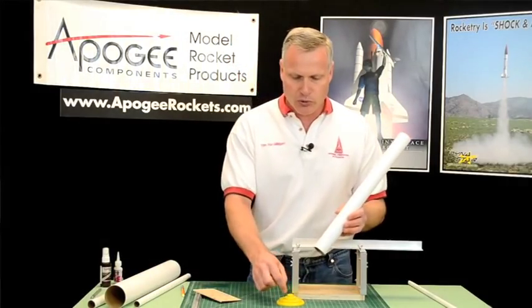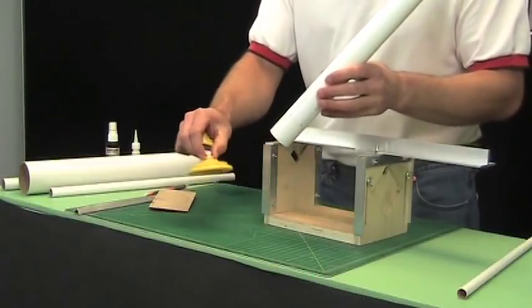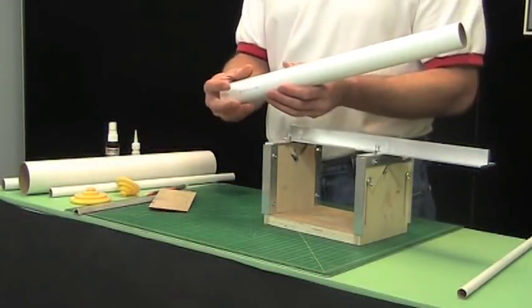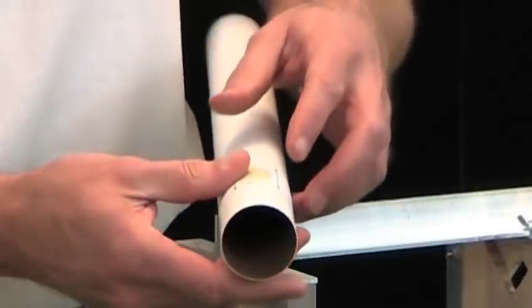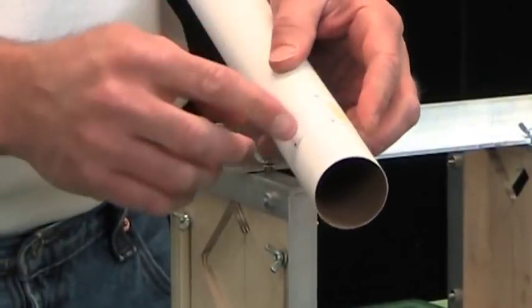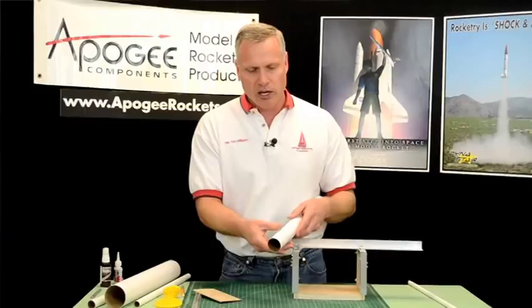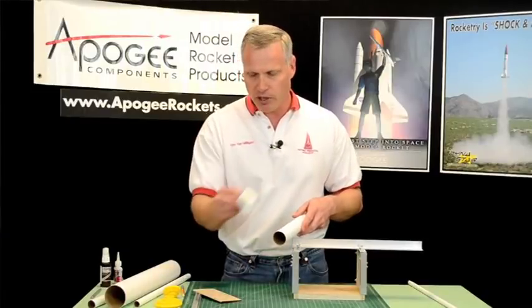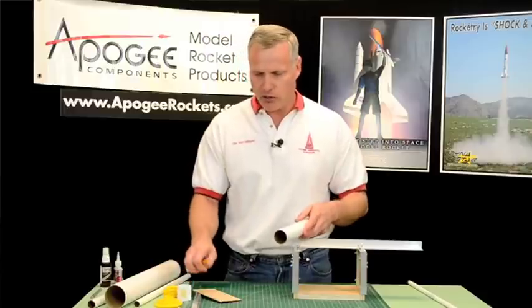These are convenient for standard size tubes. If you have a non-standard size tube or using more than three or four fins, like this one here has five fins on it, then you're going to have to make a paper guide like this. And I'll show you how to do that in a future video.